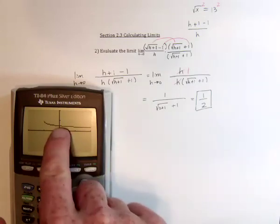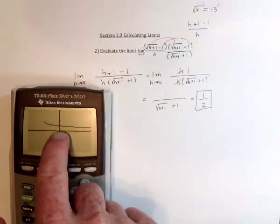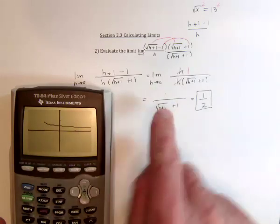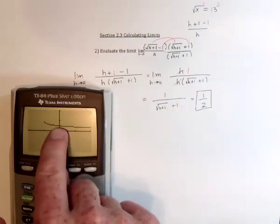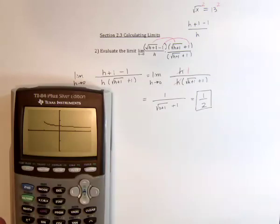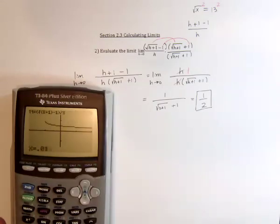And as we're close to 0 for the x value, or over here for the h value, then the function seems to be at a height of 1 half. So if we're close to 0, like 0.01,